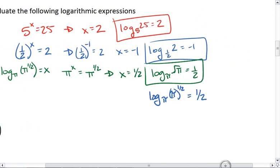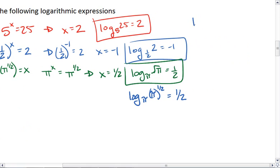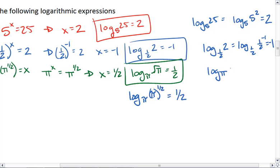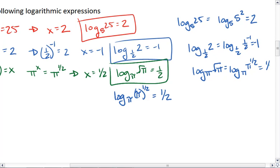And we can see that with the above problems as well. That log base 5 of 25 can be written as log base 5 of 5 squared, which equals 2. That log base 1 half of 2 can be rewritten as log base 1 half of 1 half to negative 1, which is negative 1. And back to the problem we just did, log base π of the square root of π can be written as log base π of π to the 1 half, giving us the answer of 1 half.